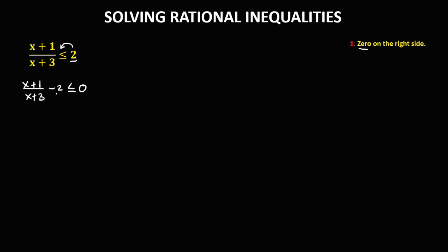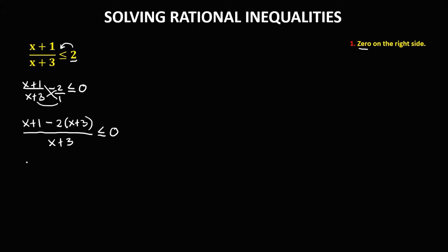Then simplify, so using cross multiplication — that's over 1. So we have x plus 1 times 1, that's x plus 1. Then minus 2 times x plus 3. Then over x plus 3 times 1, or x plus 3. Then less than or equal to 0.